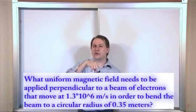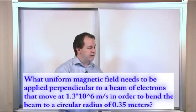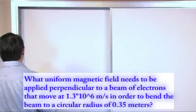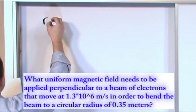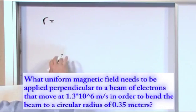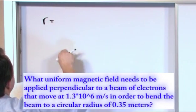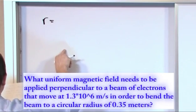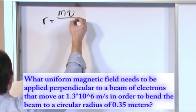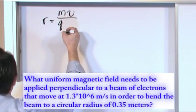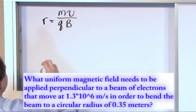So anytime you're given the radius of a circular motion of a charged particle beam, there's a good bet that you're going to need to use the equation that we derived in the last section. The radius of any particle traveling in a magnetic field is r = mv/(qB), the mass times velocity divided by the charge times the magnetic field strength.